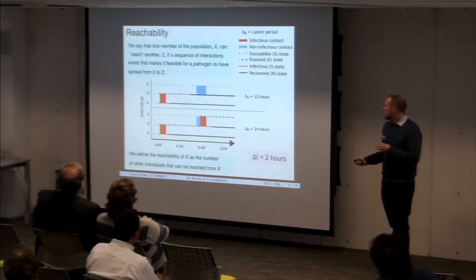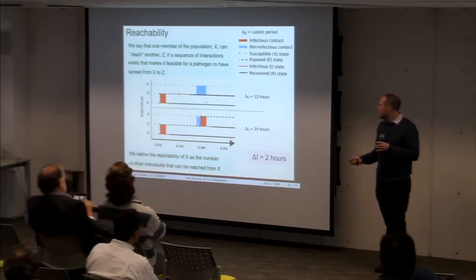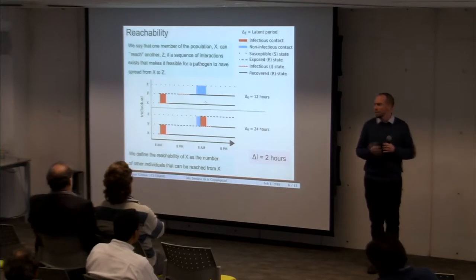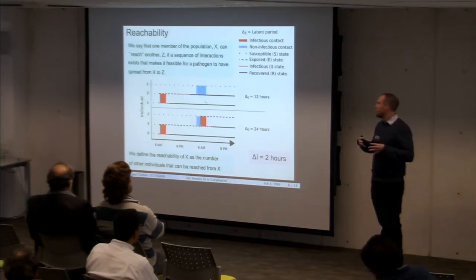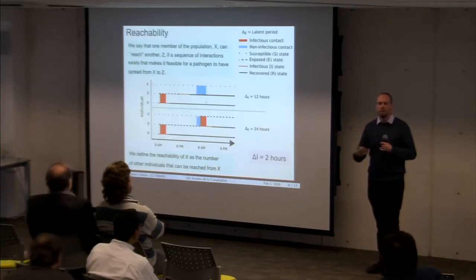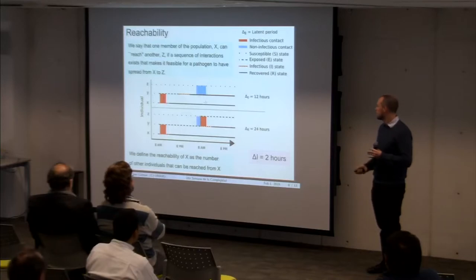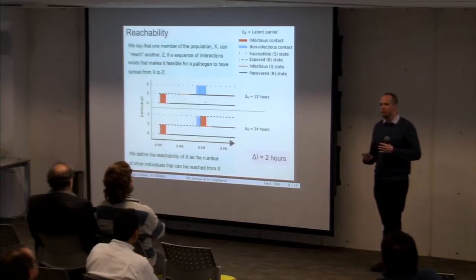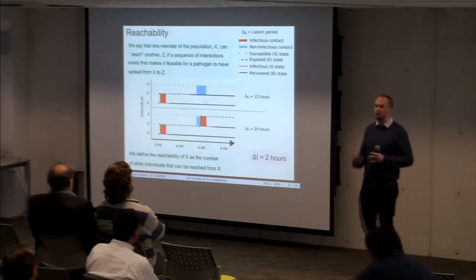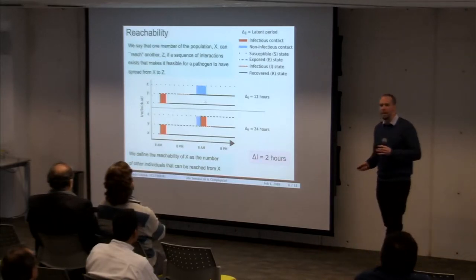We also have to make an assumption about the infectious period. In this example, we're assuming a very short infectious period of two hours — which isn't biologically realistic — but it represents the time between somebody becoming infectious and the time they realize they have an infection due to symptoms and decide to self-remove themselves from the system. This very much depends on behavior change literature, where people study how individuals actually react to disease symptoms.